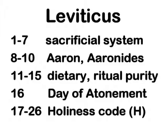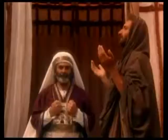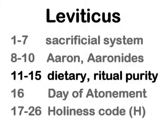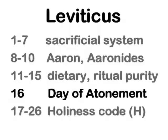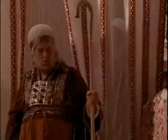We can break the book of Leviticus down. Chapters 1 through 7 cover the sacrificial system. Chapters 8 through 10 recount the installation of Aaron as high priest and the Aaronides as the priestly clan within Israel. Chapters 11 through 15 cover the dietary laws as well as the ritual purity laws. Chapter 16 describes the procedure to be followed on the Day of Atonement, or Yom Kippur.